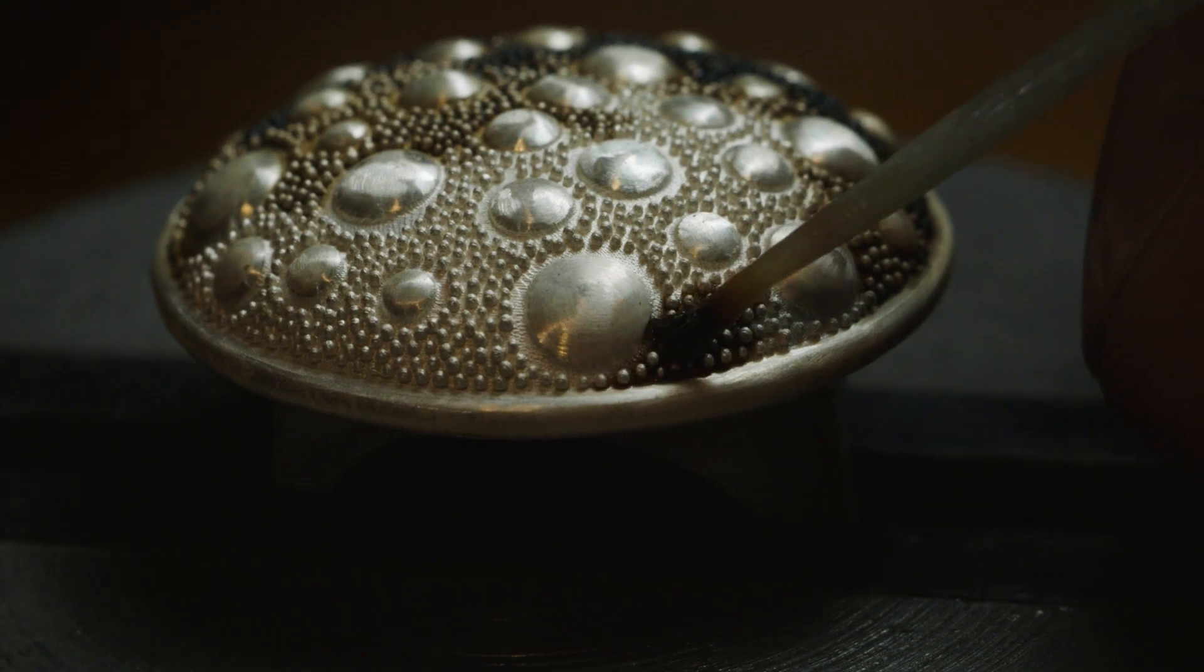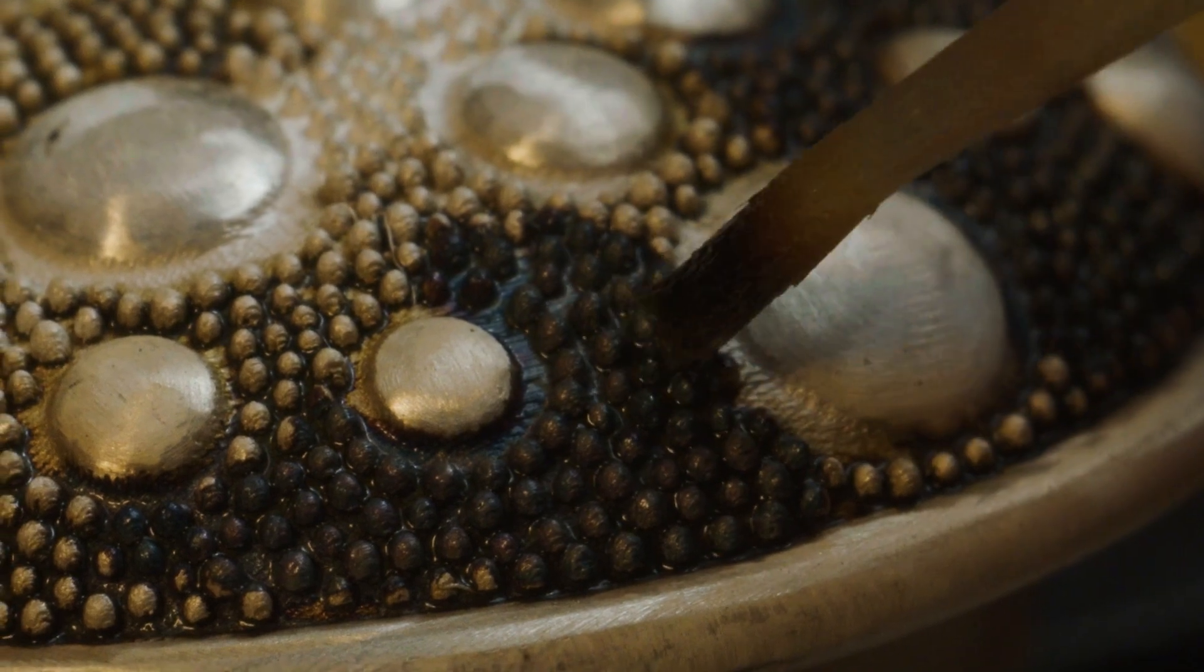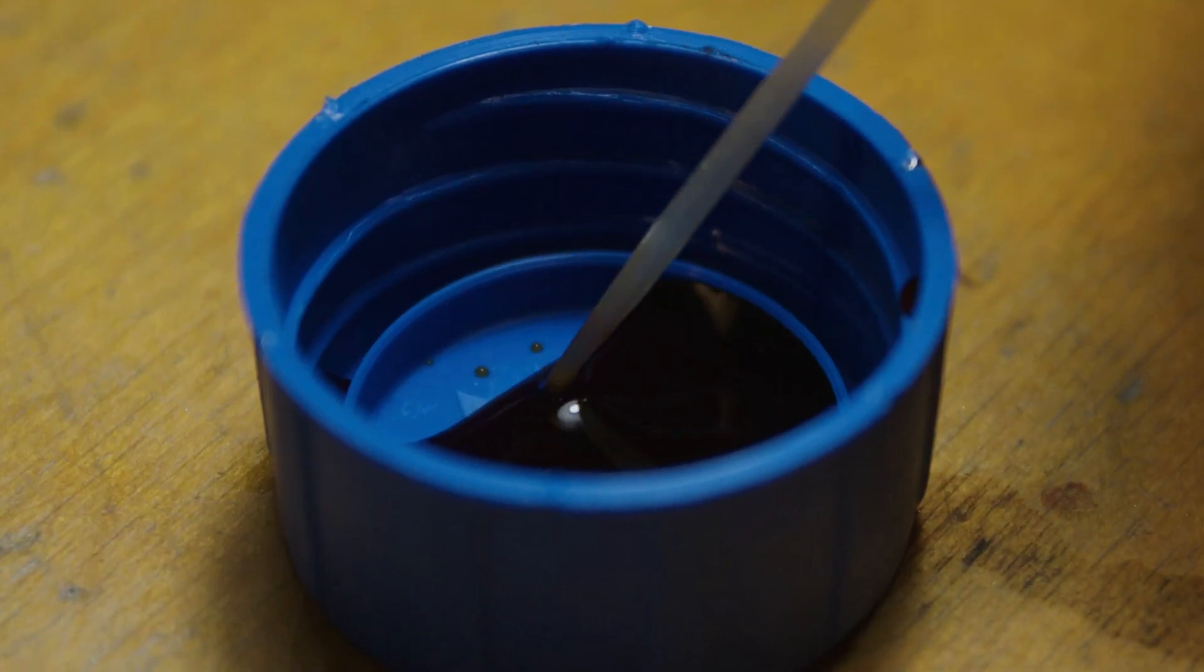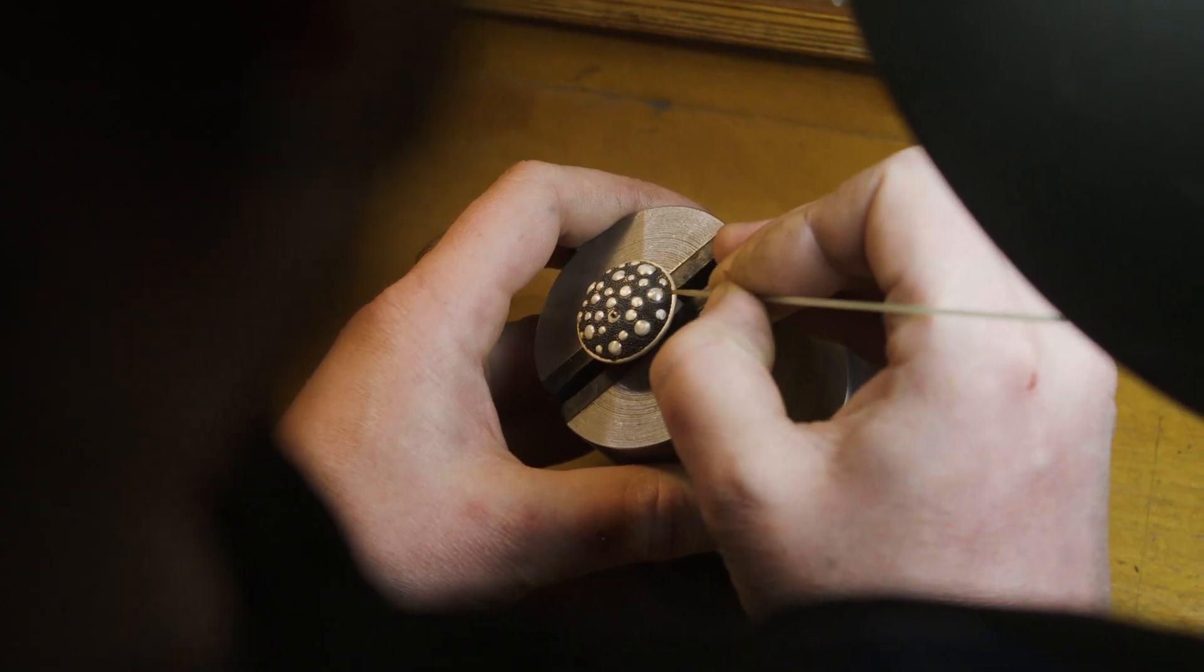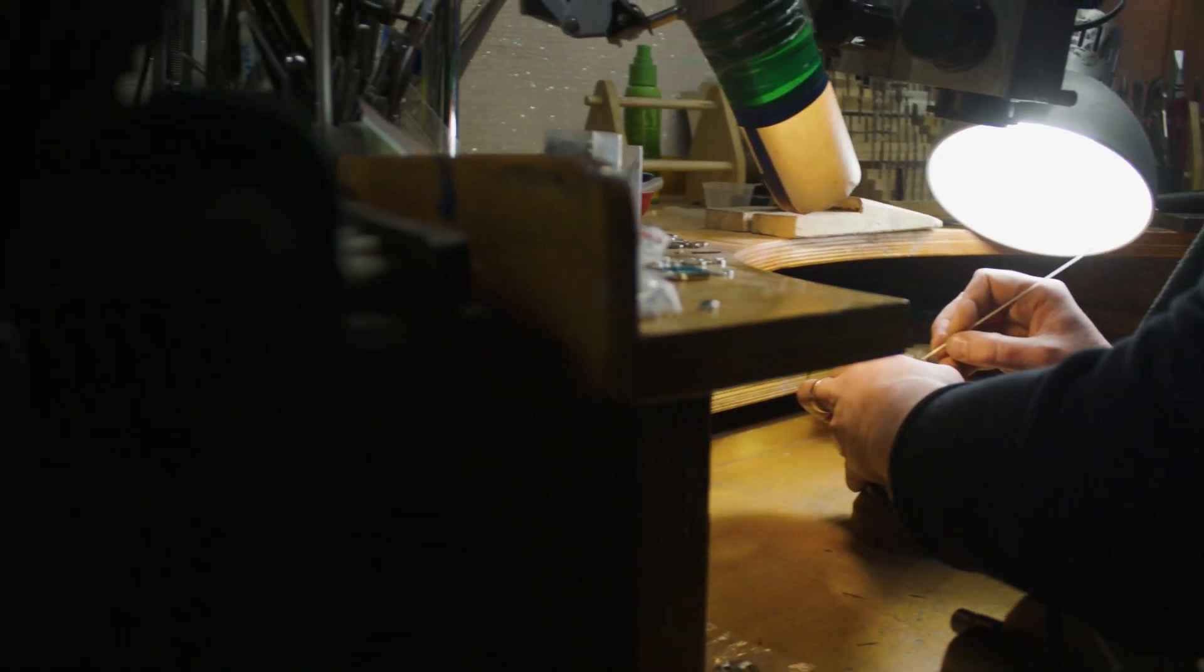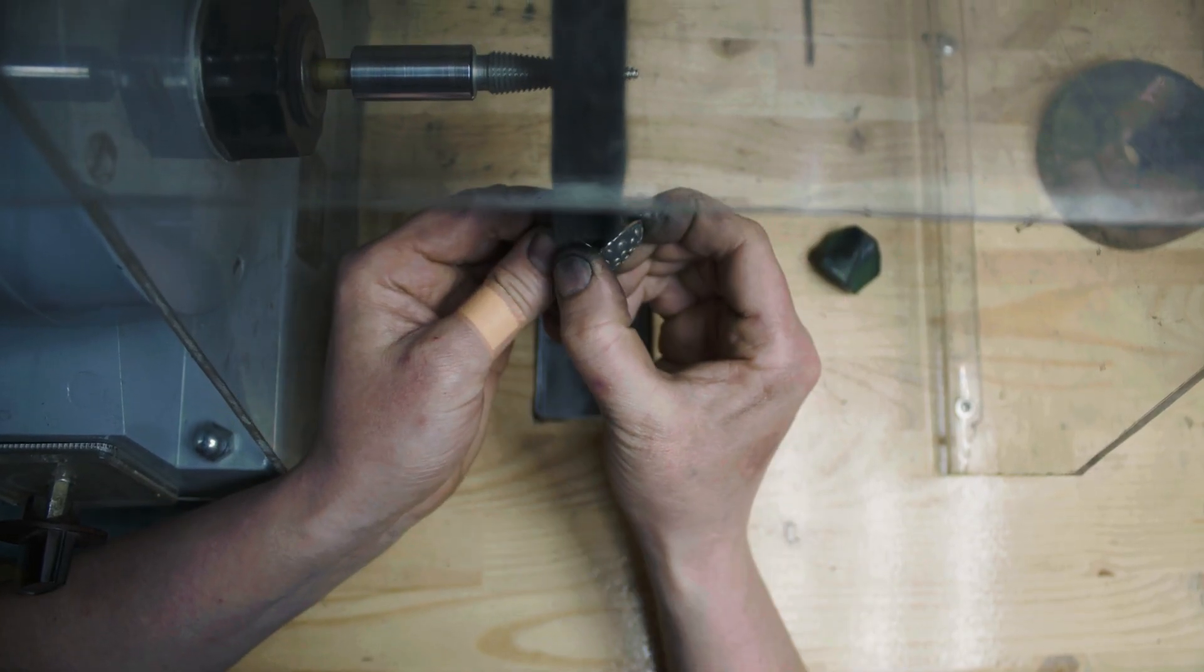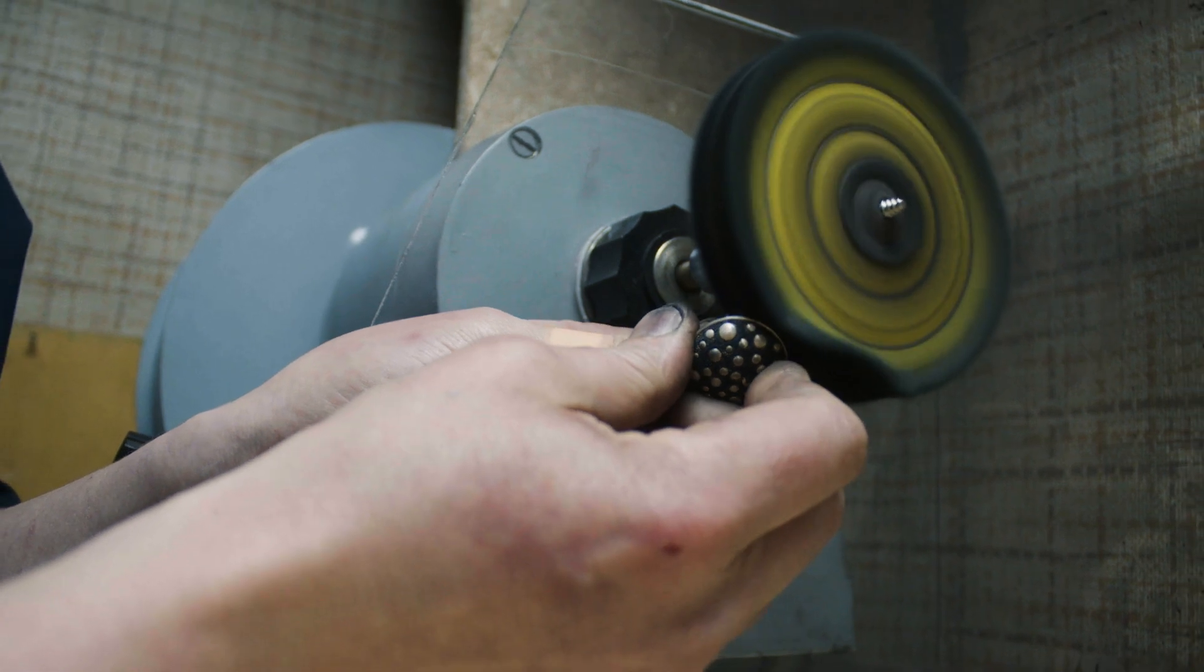A special solution is then applied with a brush to darken the silver. The ring is then carefully polished to avoid damaging the blackening layer.